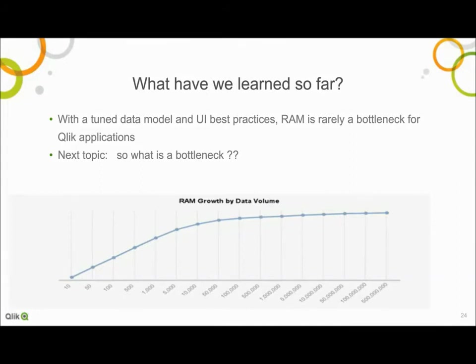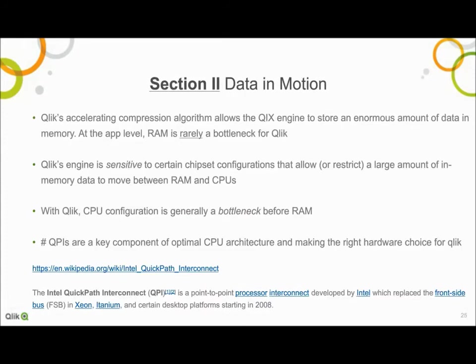Section 2: Data in Motion. As we load data into Qlik and mind how to handle uniqueness well, RAM itself is rarely a bottleneck. However, all that data moving around in RAM must be worked on, and it turns out Qlik is sensitive to certain hardware configurations that can either throttle or constrict the amount of data flowing between the RAM and the CPUs. Inefficient CPU configurations will generally be a performance bottleneck before RAM is, and it's important to discuss what those are so that you set up a good platform for Qlik's optimized engine.